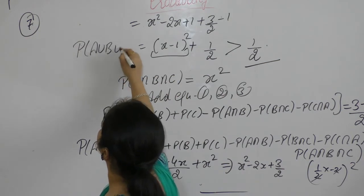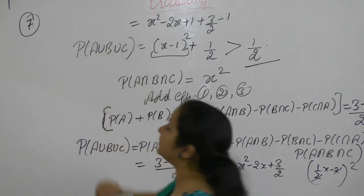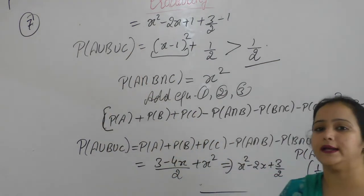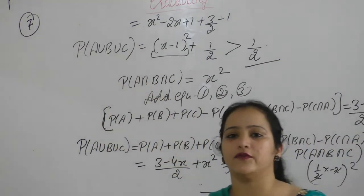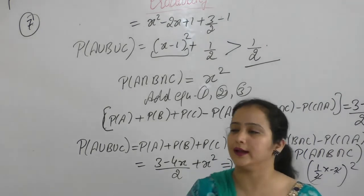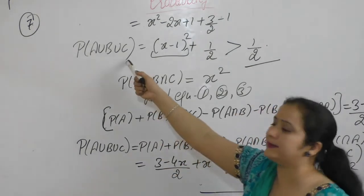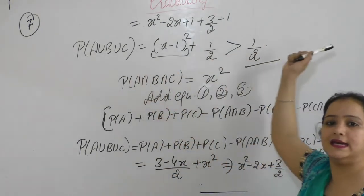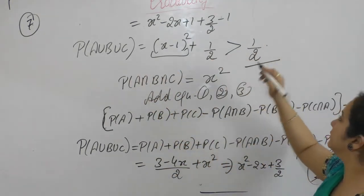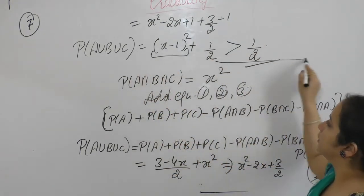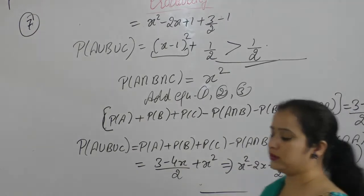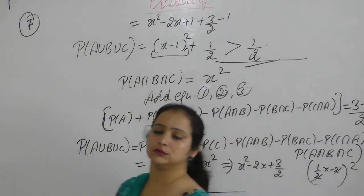Therefore, probability of A union B union C — the probability of occurrence of at least 1 out of A, B, and C — is greater than 1 by 2. Note it down.